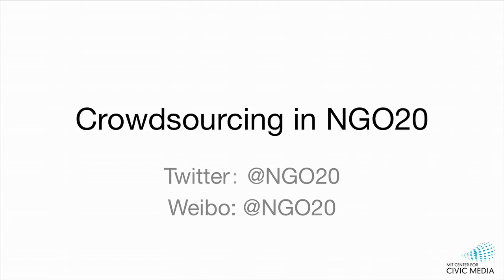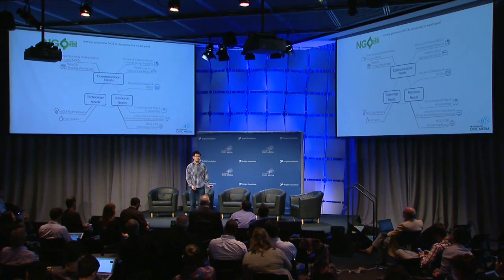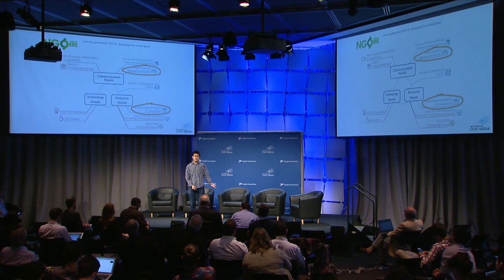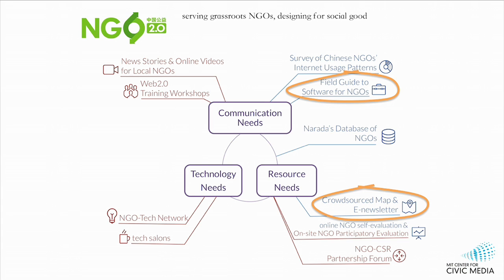This stuff is so cool — I had like 50 ideas already. Next up I'd like to invite Yu Wang, from whom I've not only learned a ton about the Chinese context, but I'm consistently impressed by his ability to get stuff done. I will spend some time introducing how crowdsourcing works in our project, the NGO2O project. We work with Chinese NGOs — non-profit organizations — and we provide solutions to their communication needs, technology needs, and resource needs. Today I'll showcase two of these 10 projects: our crowdsourced map and the field guide to software for NGOs.